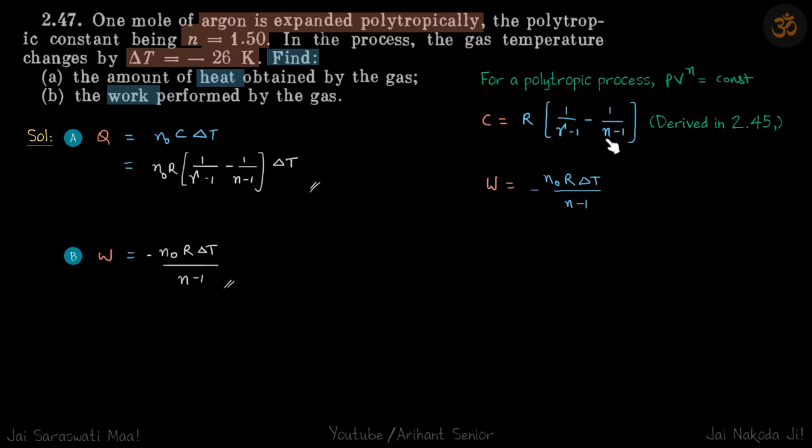Then your specific heat capacity should come as zero, because when n is equal to gamma that's an adiabatic process. In adiabatic process Q is zero, which means C should be zero. So this is our formula for the molar heat capacity.